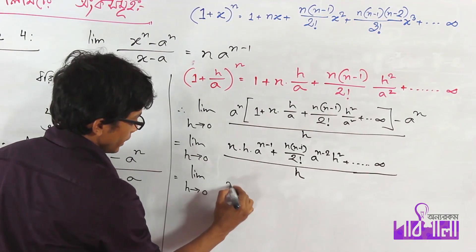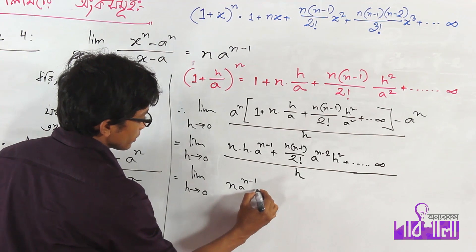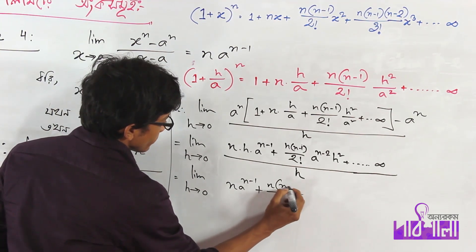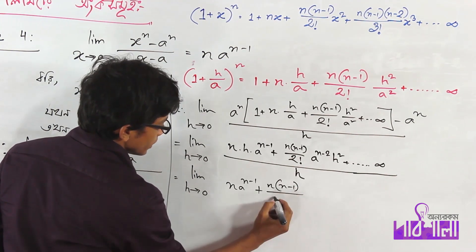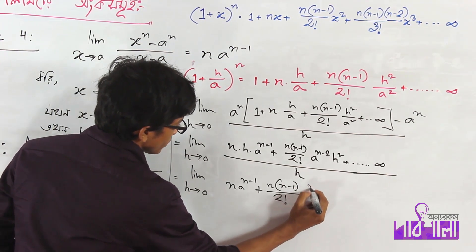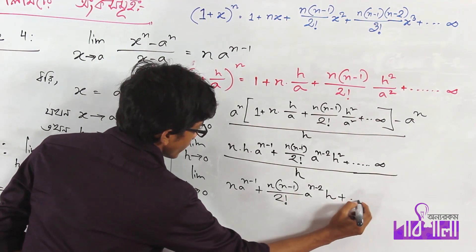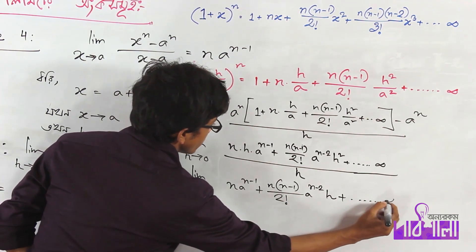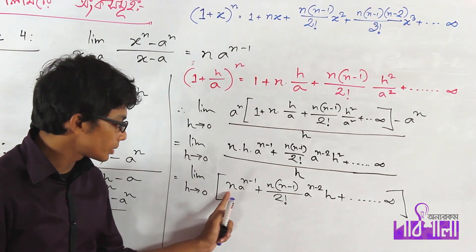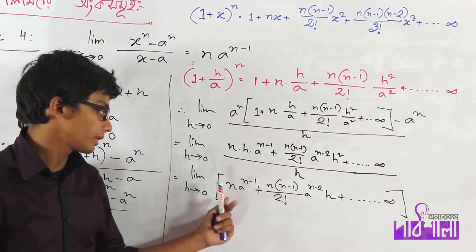After simplifying, we get n times a to the power n minus 1, plus n(n minus 1) divided by 2 factorial times a to the power n minus 2 times h, plus dot dot dot infinity. The first term does not contain h, but subsequent terms do.